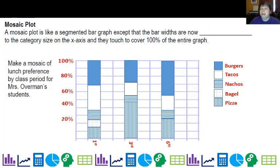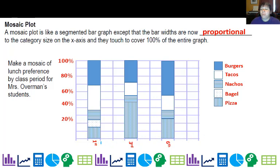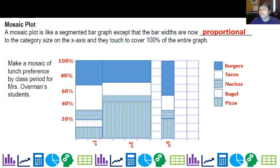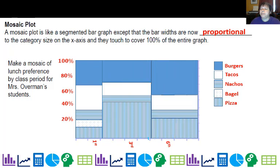A mosaic plot is like a segmented bar graph, except instead of having uniform bar widths, they're now proportional. The difference is I take the segmented bar graph and the width of each bar represents the proportion of that category. So I need to stretch first period out to roughly 21% of the total width, stretch third period to about 39%, and leave 39% for sixth. And voilà — that is a mosaic plot.